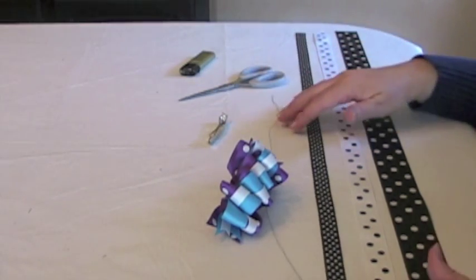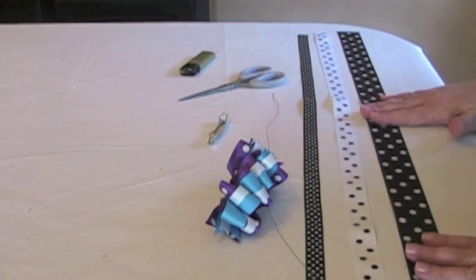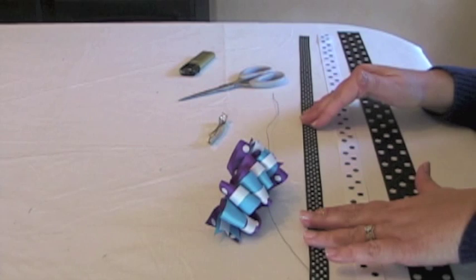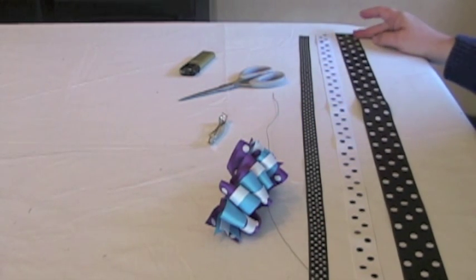You'll need some different sizes of ribbon. Here I'm using 1.5 inch, 7.8 inch and 5.8 inch polka dotted black and white ribbon, and the lengths are approximately 2.5 to 3 feet long.